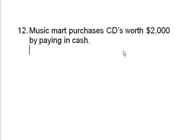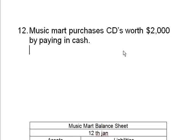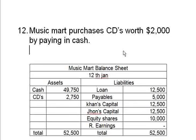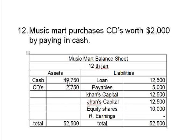Transaction 12: MusicMart purchases CDs for $2,000 by paying cash. The cash account decreases by $2,000 and the CDs value increases by $2,000. Earlier CDs were $750, now they are $2,750. This is simply converting one asset — cash — into another asset — CDs.